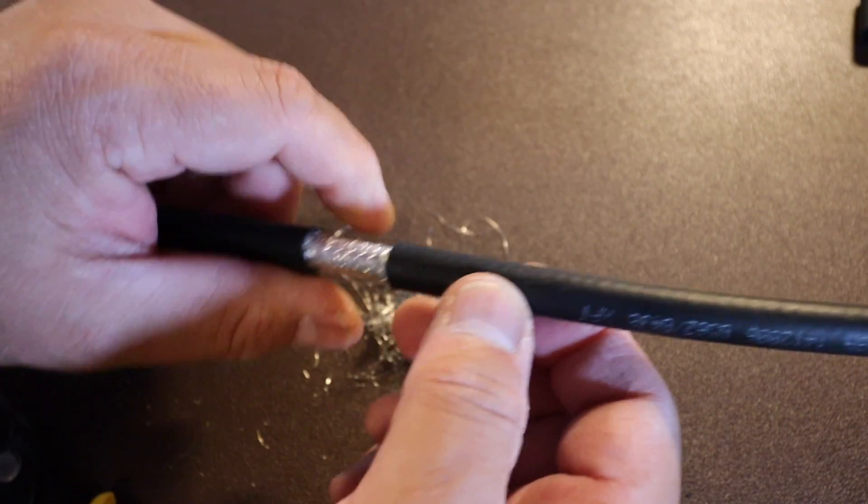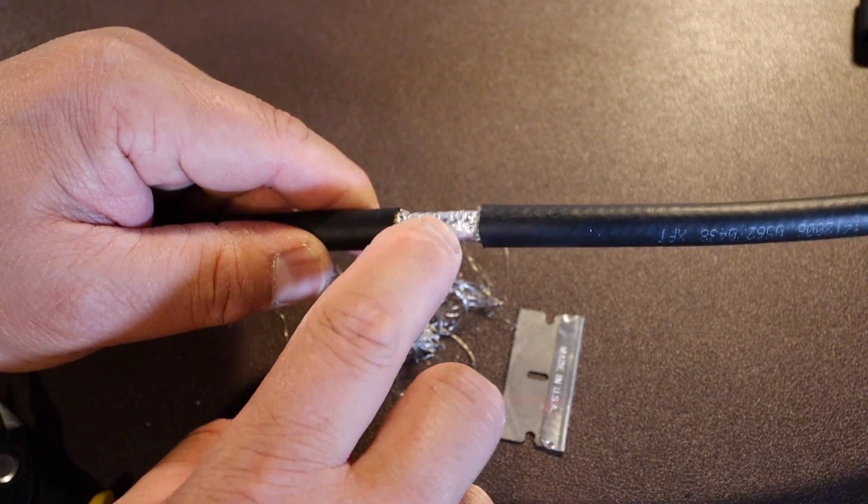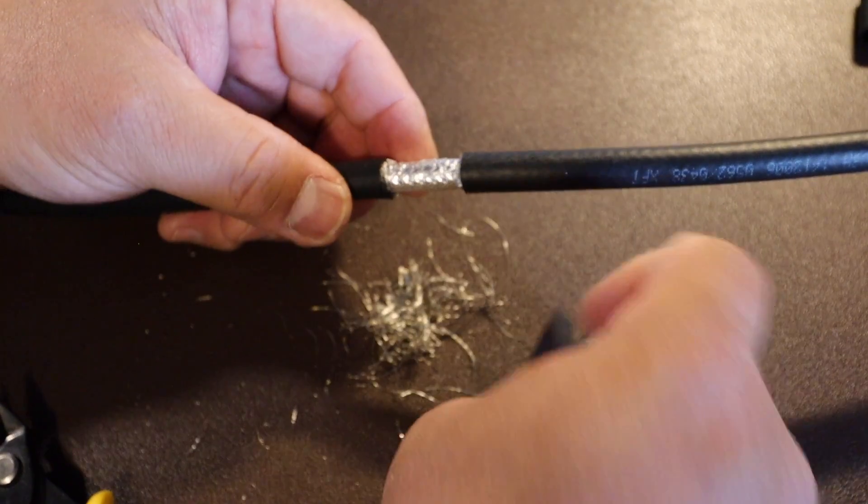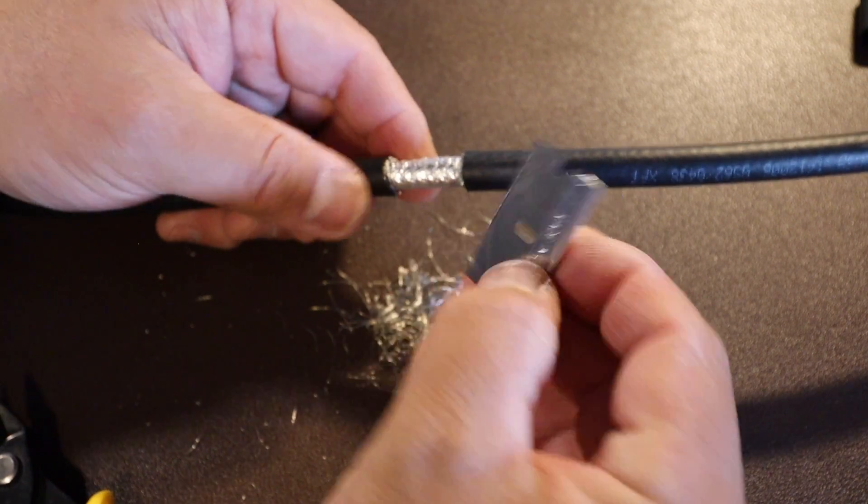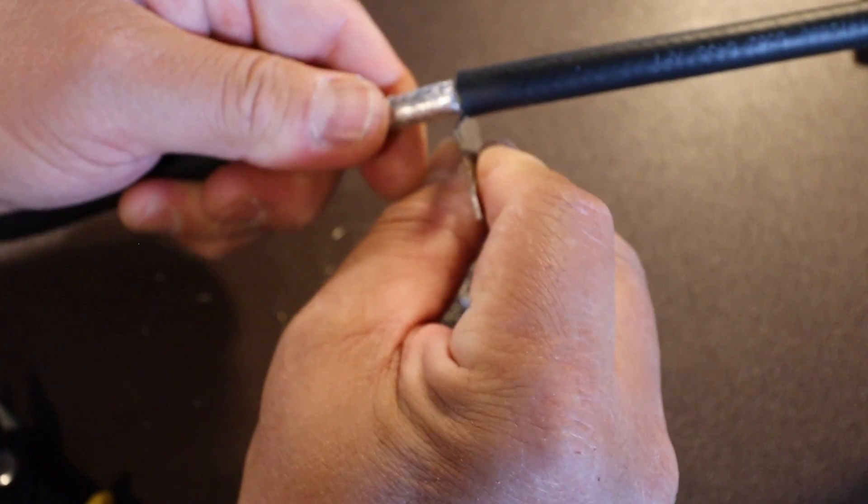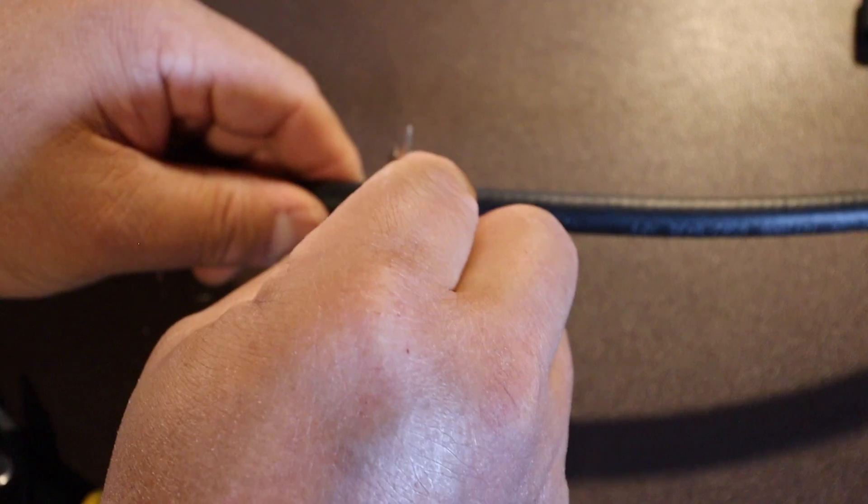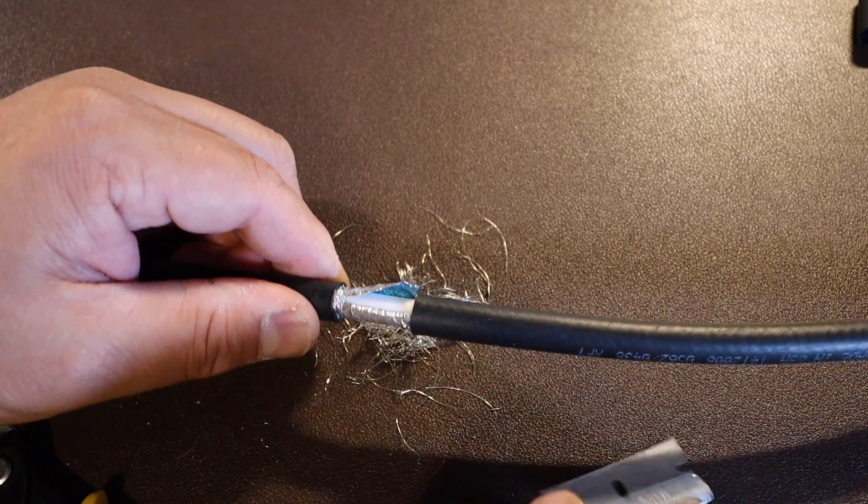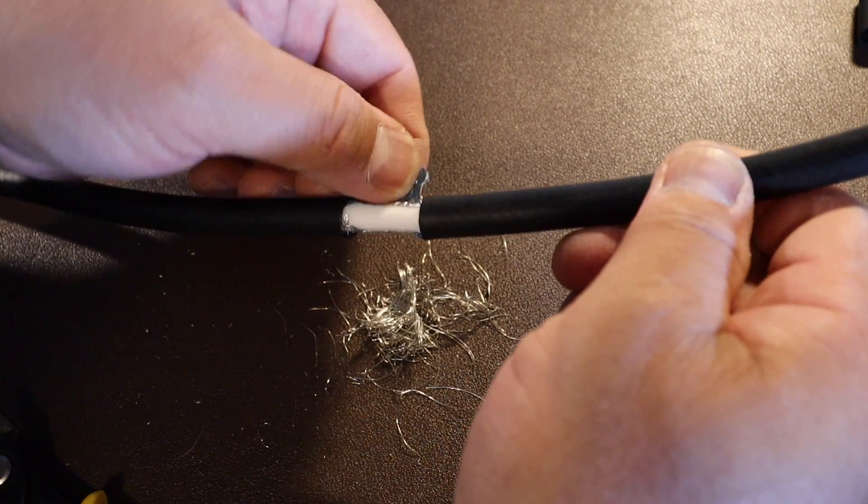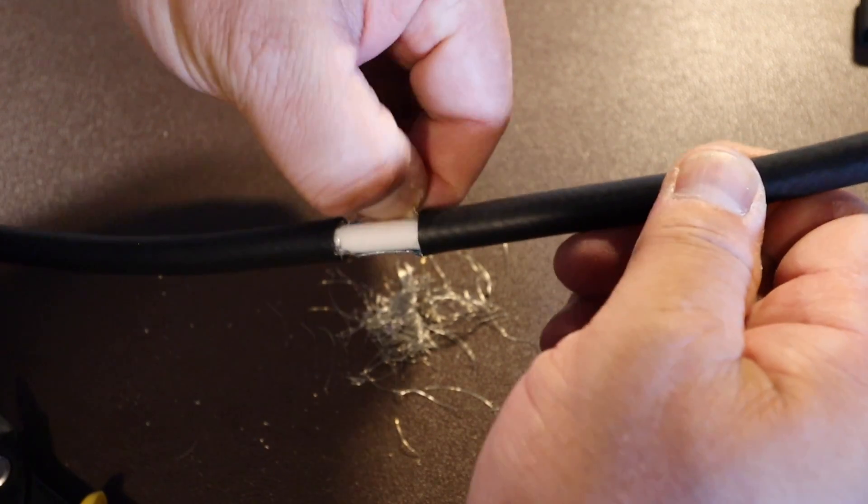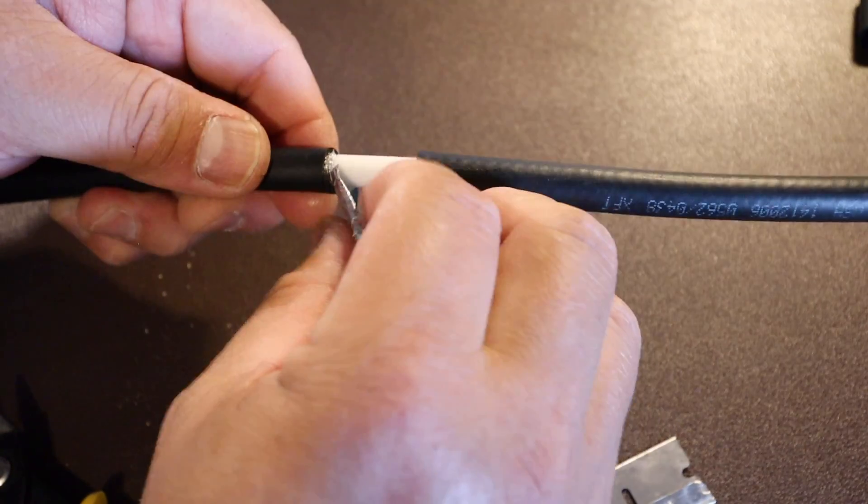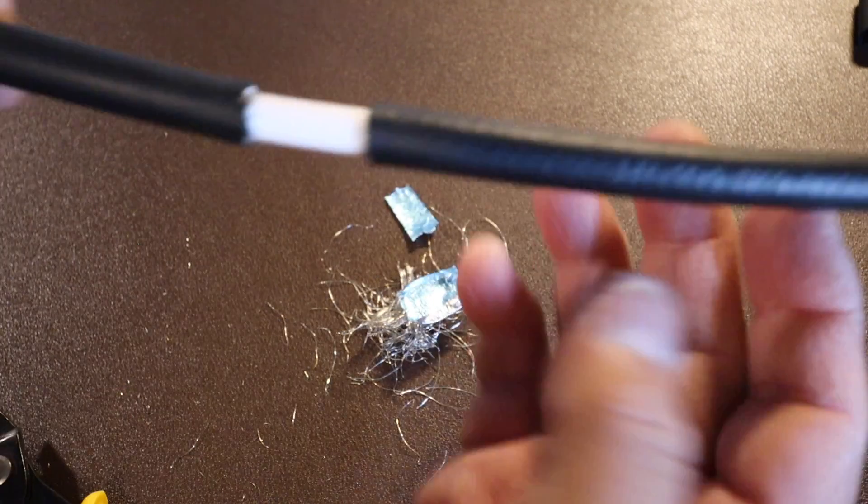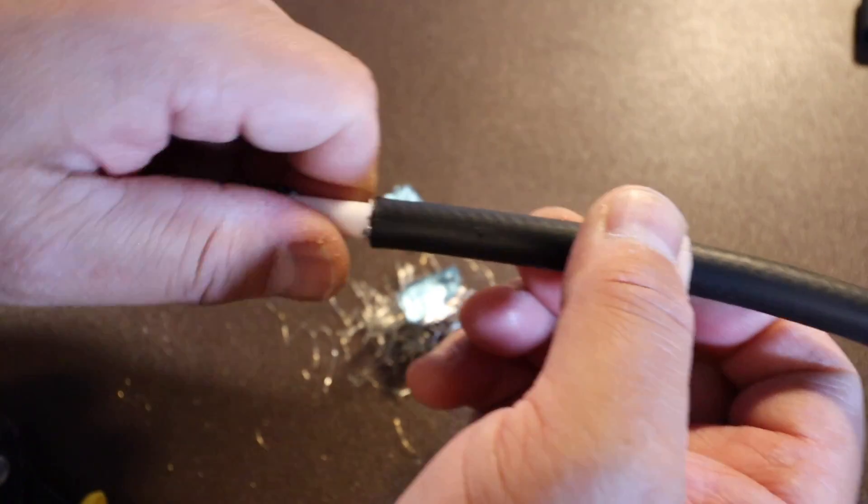So this LMR 400 has another shield here. I'm going to remove that as well. Might have to use the razor blade. And score around it. Just like that. Make sure there's no loose strands.